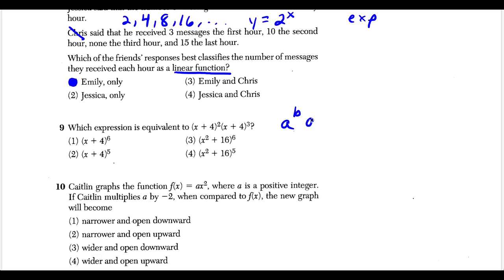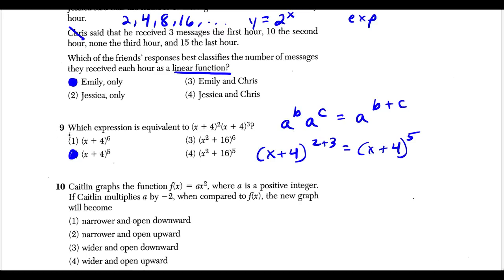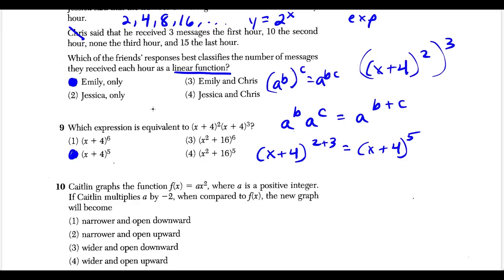Question nine requires the law of exponents: a to the b times a to the c equals a to the b plus c — keep the base, add the exponents. Since both terms have the same base (x plus four), we get x plus four to the power of two plus three, which is x plus four to the fifth power — choice two. Choice one would apply if you were raising a power to a power, which multiplies exponents. Choice three incorrectly multiplies the bases.